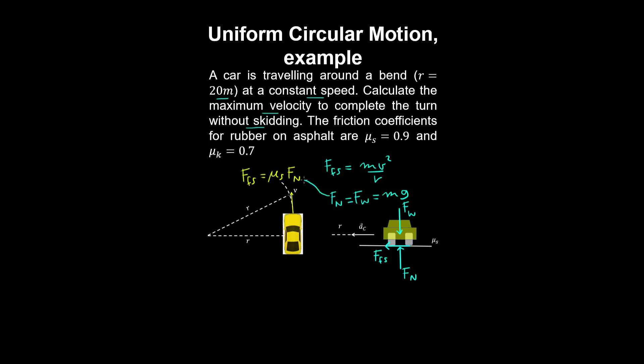Substitute the normal force into the expression for static friction, then substitute the static friction into the equation. This allows you to solve for the maximum velocity for the car to complete the turn without skidding.